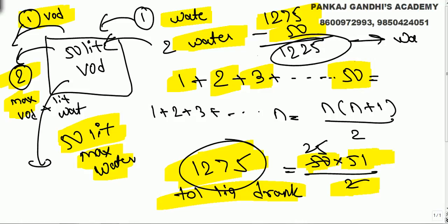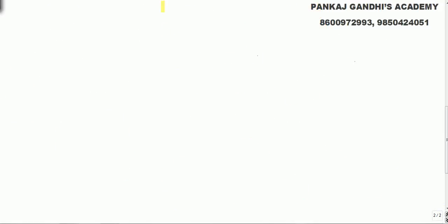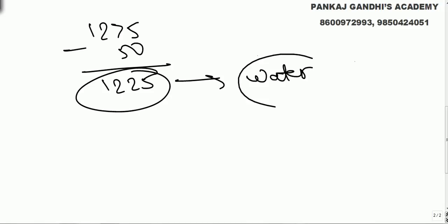So how much water he drank is 1225. Simple question, he never added vodka. So total liquid he drank is 1275. Out of that vodka was always 50. So how much water he drank in the whole process, out of total 50 he drank was vodka.